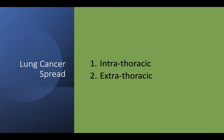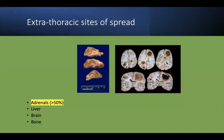Lung cancer spreads by either intrathoracic mode or extrathoracic mode. The extrathoracic sites of spread include the adrenal gland, the liver, the brain, and the bone. These are the important organs where extrathoracic spread of bronchogenic carcinoma occurs. The most common site of distant metastasis is usually the adrenal gland, and the other ones are liver, brain, and bone.